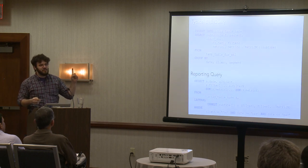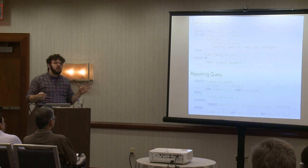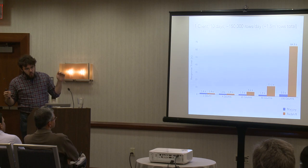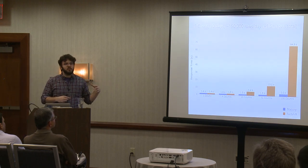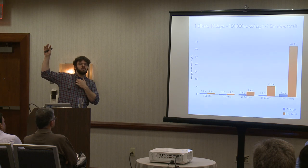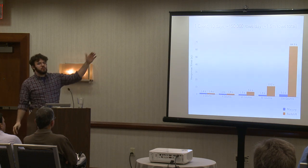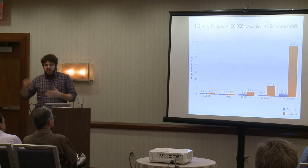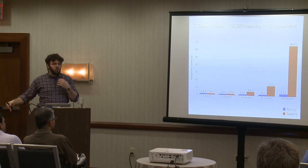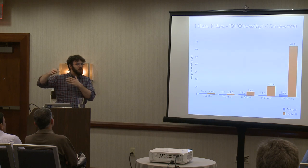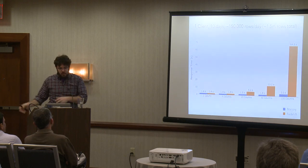Now I'll show you some of the strengths and weaknesses of this approach. This is a comparison to Redshift — for one of our more typical clients, we did a 10-day query with 150,000 rows a day. Our Redshift cluster has eight nodes, 32 cores each, spinning disk drives. You can see that column stores, if you select all the columns, don't work as well. This approach allows you to still get some of the compression advantages — we're getting 8 to 10x compression — without some of the problems of the column store where all the columns are separate.